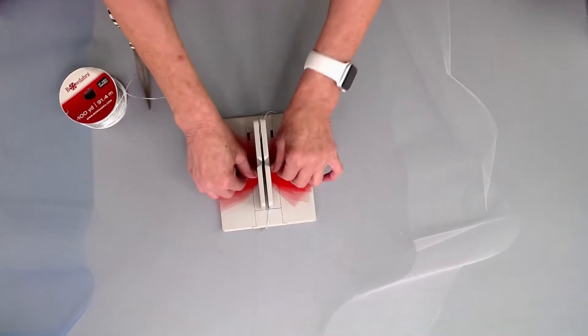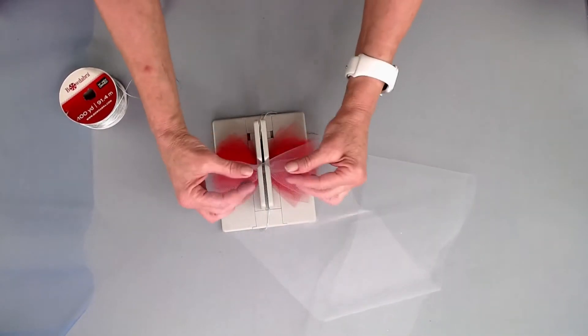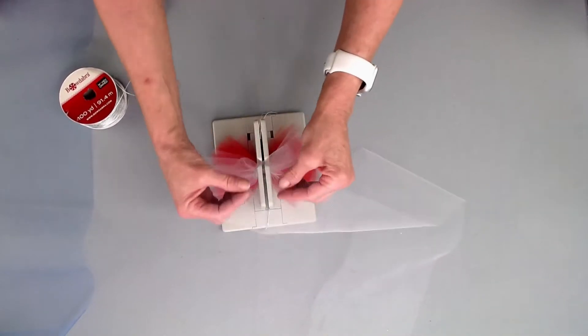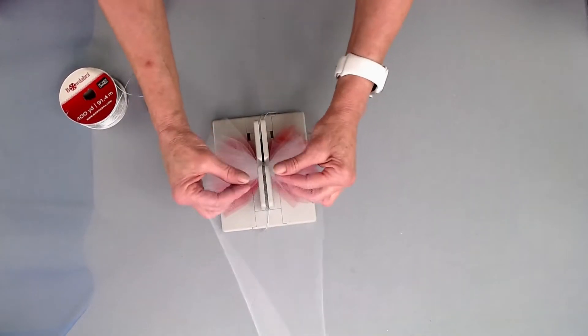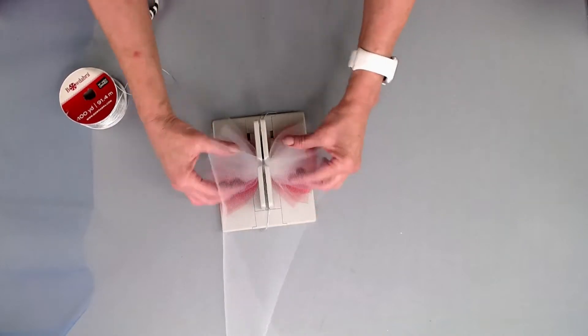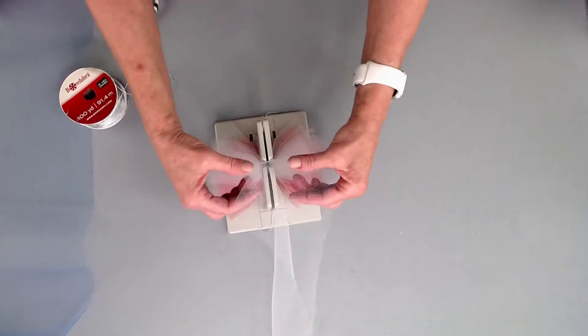Now I'm going to just push that down and then take my white tulle and just scrunch this down in here and keep scrunching everything. You can see there's a lot. I've got two yards of each of these tulles that I'm using in this bow.